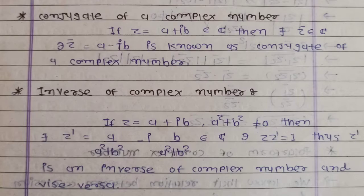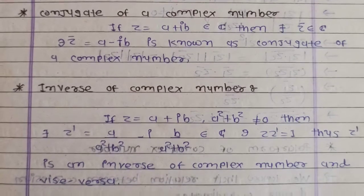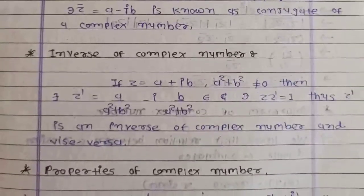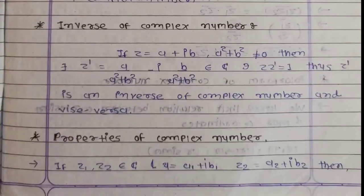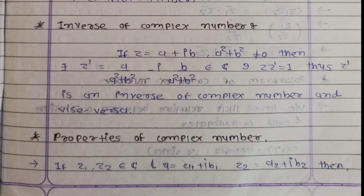To repeat the definition: a complex number is a number defined by the form a plus ib, or x plus iy, where a, b, x, y belong to R. So z is equal to a plus ib where a and b are in R, or equivalently z is equal to x plus iy.